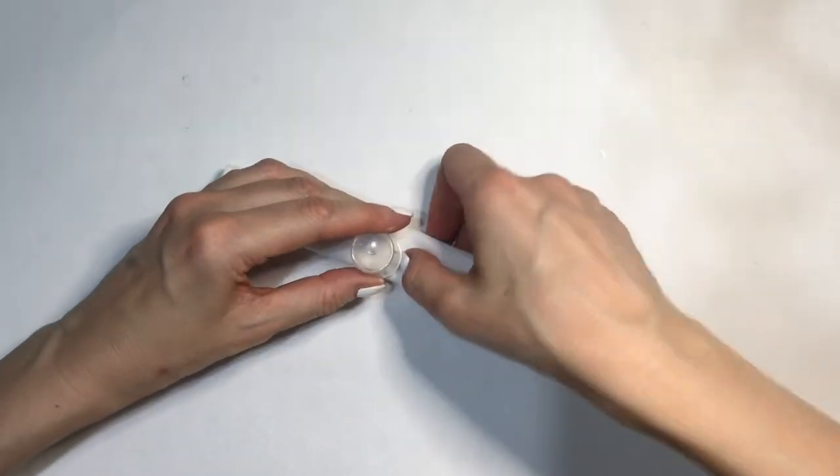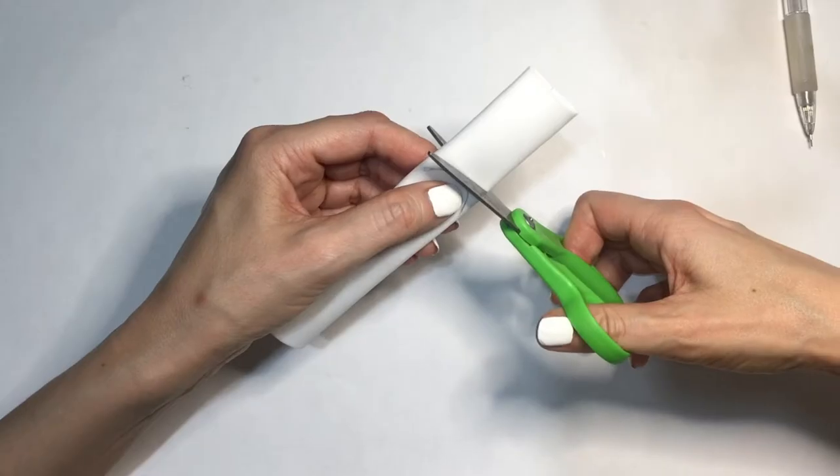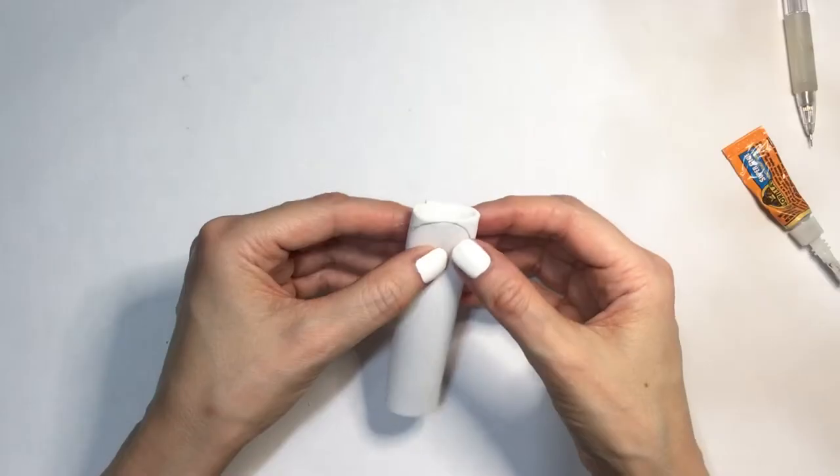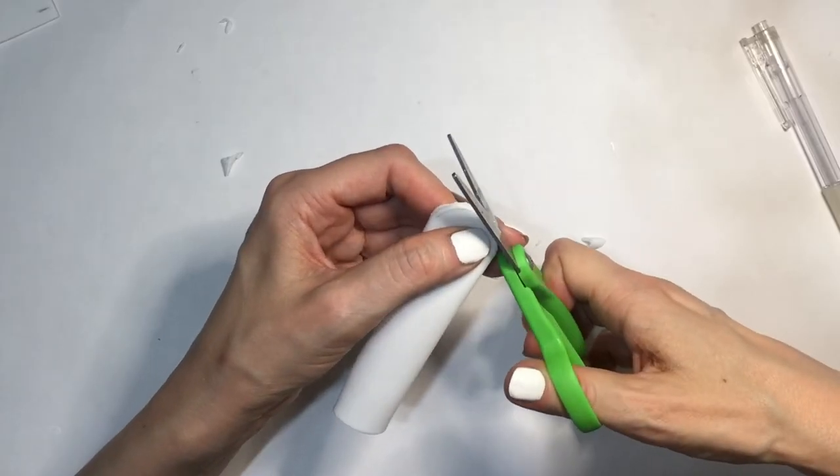I'm just going to measure or feel where my scissors end and then mark that round end with my cap. Cutting the excess of that, glue that with my super glue again just from the inside and then just cut. Once it's glued, feel free to cut and glue after if you want.